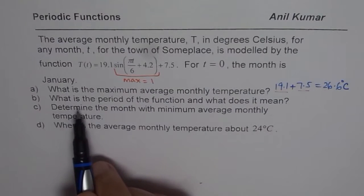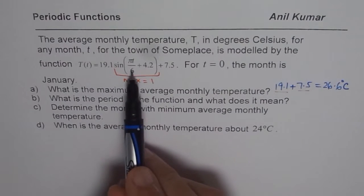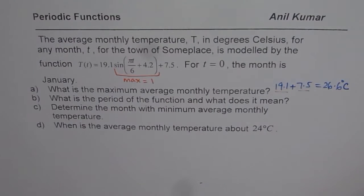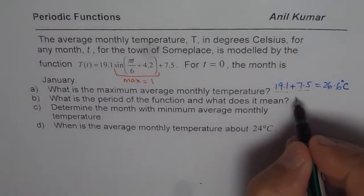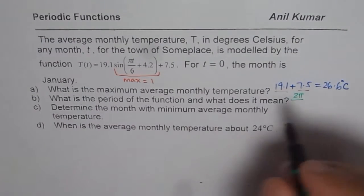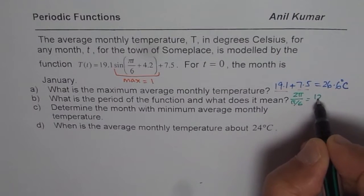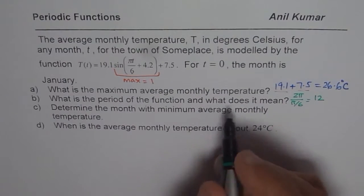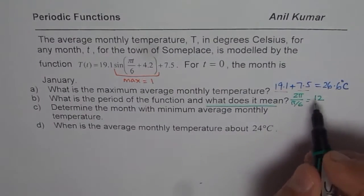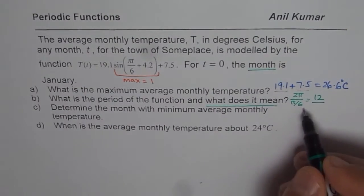The second part is: what is the period of the function and what does it mean? The period can be found from the coefficient of t, which is π/6. That is the k value. So the period is 2π/k = 2π/(π/6). The π cancels and 6 × 2 = 12, so the period is 12. What does it mean? It means the temperature varies yearly — after every 12 months it repeats. This is in months.